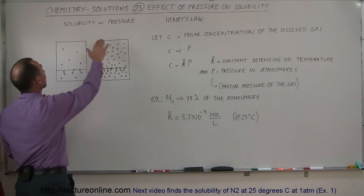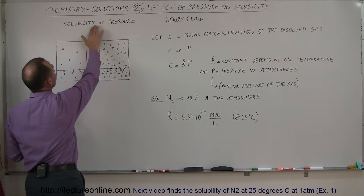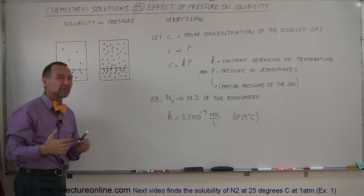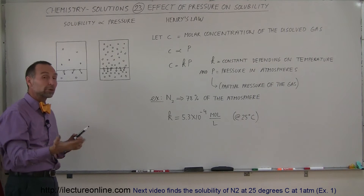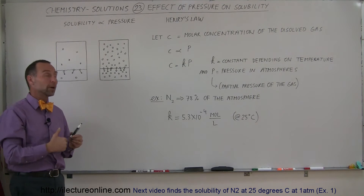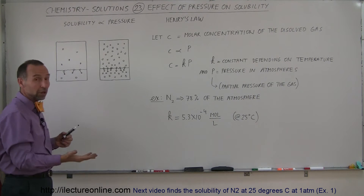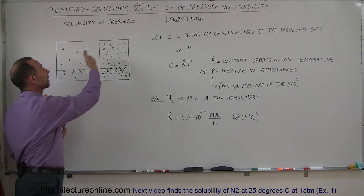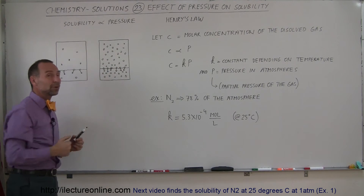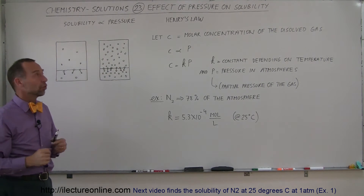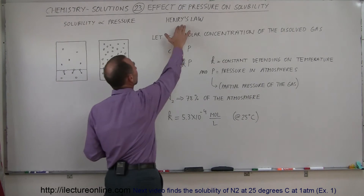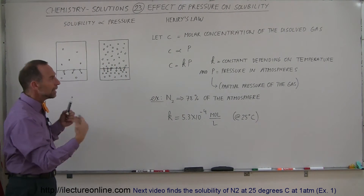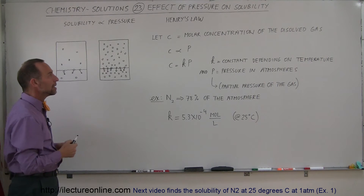The solubility is proportional to the pressure. If you double the pressure, you expect the solubility to double; if you triple the pressure, you expect the solubility to triple. In other words, if there's three times as much pressure, you expect three times as much of the gas to be dissolved. That is known as Henry's Law — Henry observed and realized that, and so he came up with that proportionality idea.